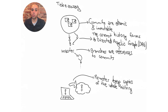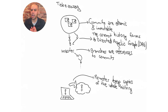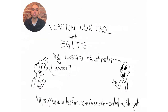Let's recap what we learned. First, commits are atomic and immutable — you can only go back and forward in time with the whole repository, not with just a single file or directory. Also, once a commit is created, it can never change. The commit history forms a directed acyclic graph, and Git has commands for you to manipulate this graph in almost any way you can imagine. Branches are just references to commits — they're just pointers. And finally, remotes keep copies of the whole history of the project, not just the current state of the repository. That was Version Control with Git, and I am Leandro Facchinetti. Thank you very much for your time.